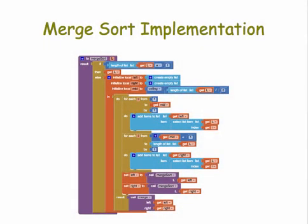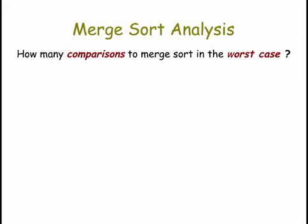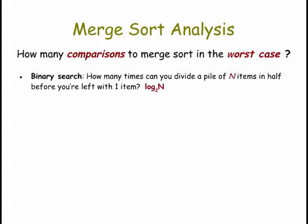What about merge sort? Here's its implementation and again we want to simplify this and abstract away the details. In merge sort, we divide the cards into n piles containing one card each, and then we merge the piles into new piles that are twice as big by comparing cards until there's just one pile containing all n cards. Just as we did with bubble sort, let's ask how many comparisons are required to do a merge sort in the worst case. Merge sort's a little bit like binary search but in reverse.